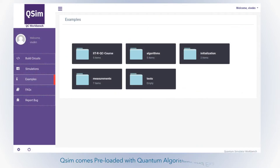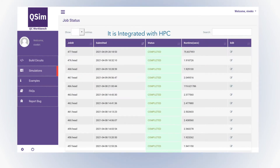QSim comes preloaded with quantum algorithms and examples, allowing users a great place to start their experiments. It is integrated with HPC so that quantum simulations are performed on powerful HPC resources, allowing multiple users to submit jobs simultaneously with different QBIT configurations.